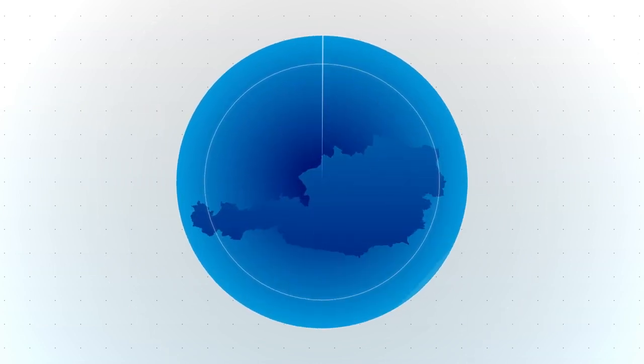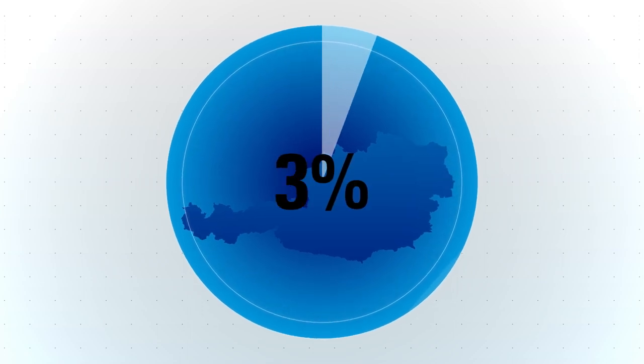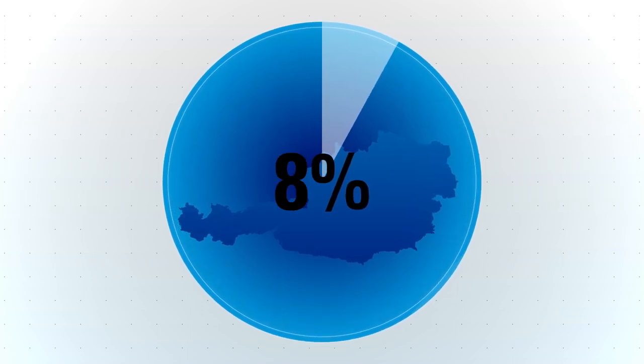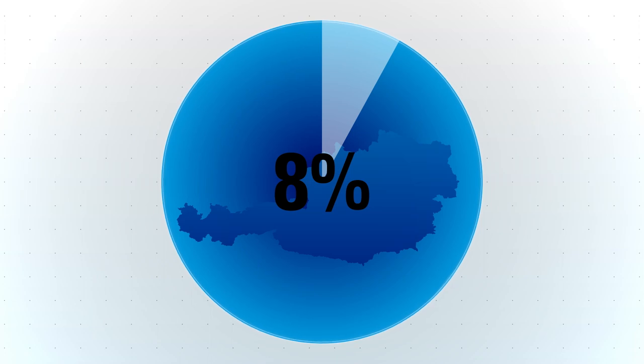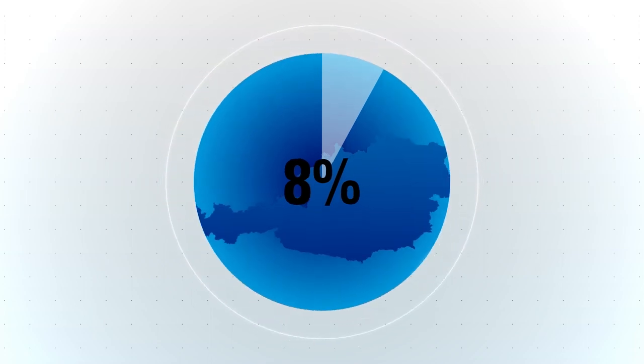Additionally, OMV also produces natural gas itself. Around 8% of Austria's natural gas demand is met by OMV exploiting domestic natural gas deposits.